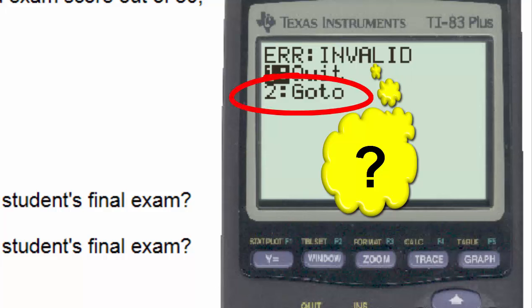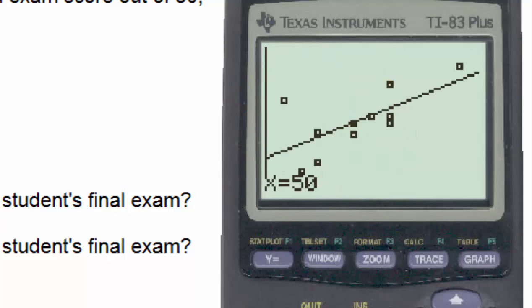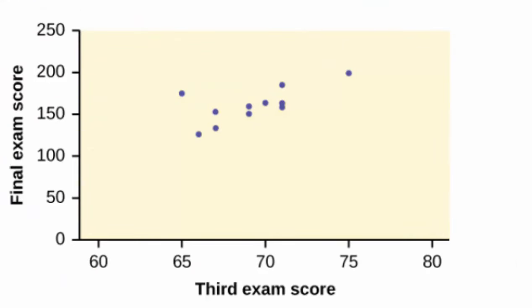Anytime we get an error statement, it's a good idea to hit the number 2 for go to if it's there. And you can see that the calculator brings us back to the input x being 50. And the reason we got this error statement is that our values go from a third exam score of 65 up to a third exam score of 75. So in making predictions, we can only use third exam scores between 65 and 75.